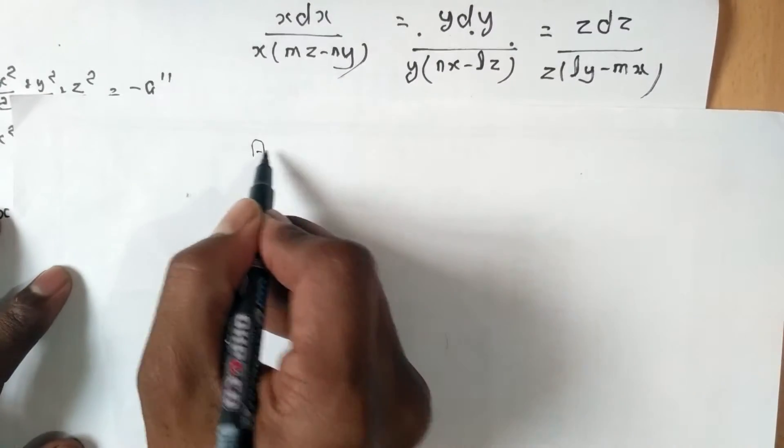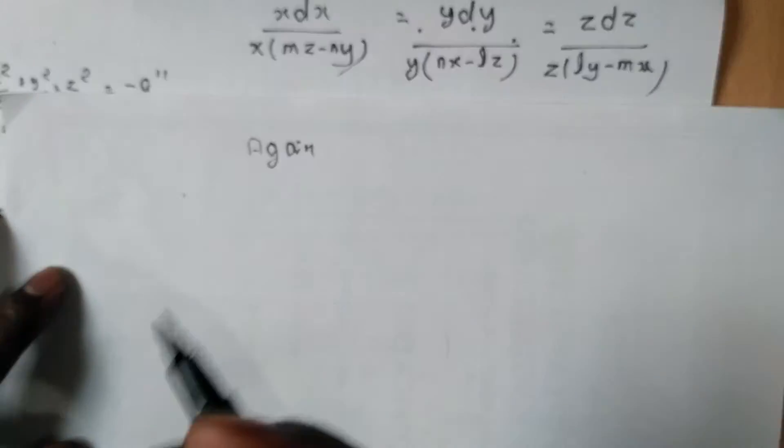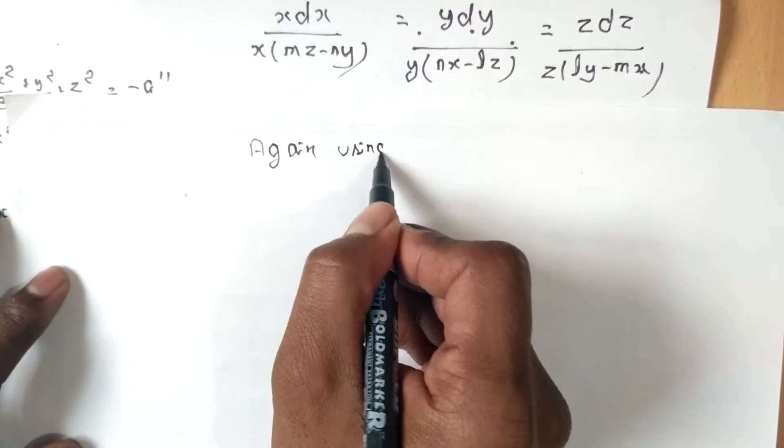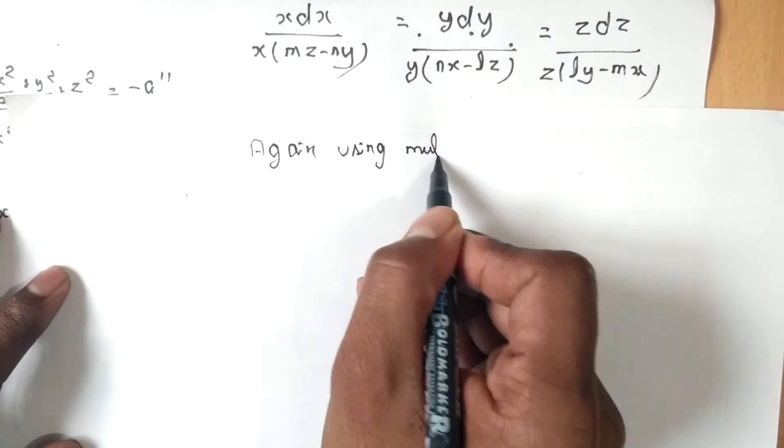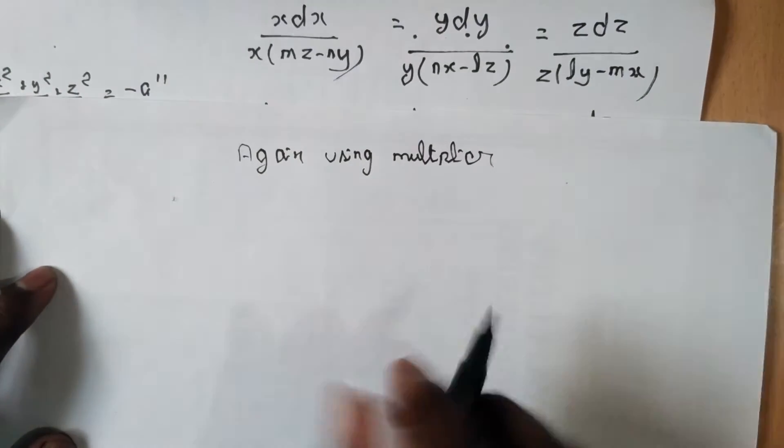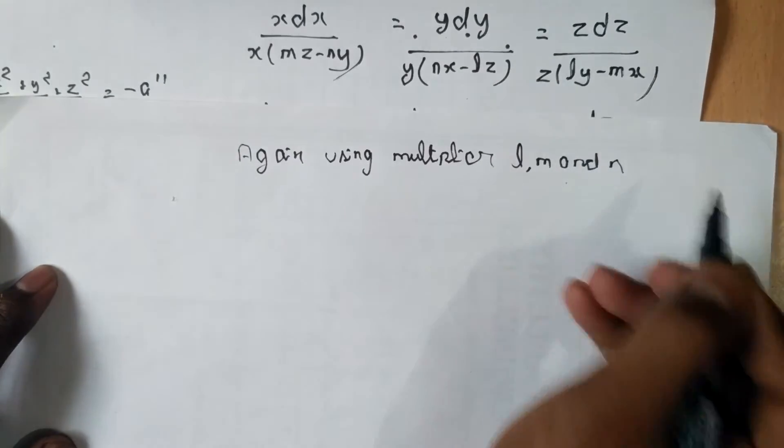Okay, now again using multipliers l, m, and n, what we get...